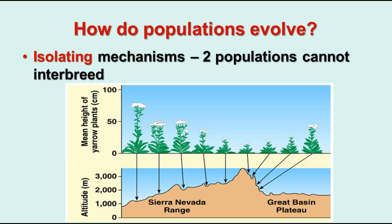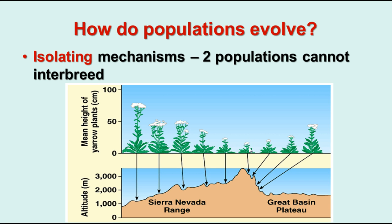Populations evolve because of isolating mechanisms that prevent populations from interbreeding, resulting in separate species forming. Here's a graph showing different kinds of yarrow plants and where they're found — they have different heights, leaf distributions, and flower locations depending on which side of the Sierra Nevadas they're on. The ones on opposite sides have great difficulty cross-pollinating because they're so far apart, and geographic features like hills separate populations. Differences also depend on elevation since plants can't grow as high at higher altitudes due to increased solar irradiation and less air, eventually possibly leading to different species forming.